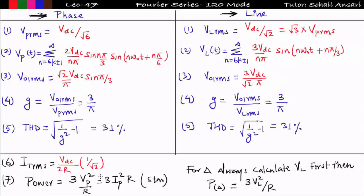For power calculation, whether the load is star or delta connected matters. If the load is star connected, you can use either line or phase voltage formula and get the same answer. If the load is delta connected, do not apply the phase voltage formula — apply the line voltage formula, because in delta connection line voltage and phase voltage are equal. For delta connection, three-phase power = 3 × Vl² / R.